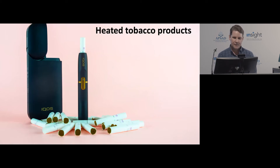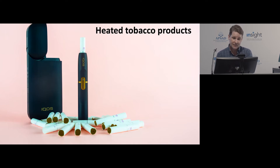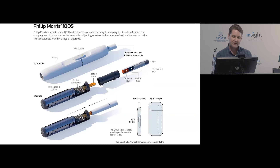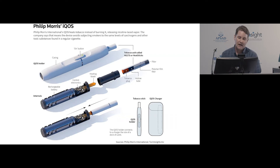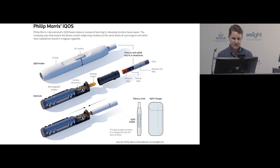The IQOS is a heated tobacco product based on the same principle as dry herb vaporisers for cannabis. Not legally available in Australia, it uses little miniature cigarettes — actual regular tobacco — placed inside the device. A heating blade inside pierces the cigarette and heats the tobacco below combustion so it doesn't actually burn, reducing some harmful products. The IQOS was invented by Philip Morris as a way of extending the life of their product.